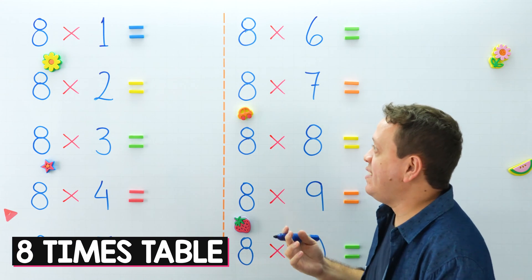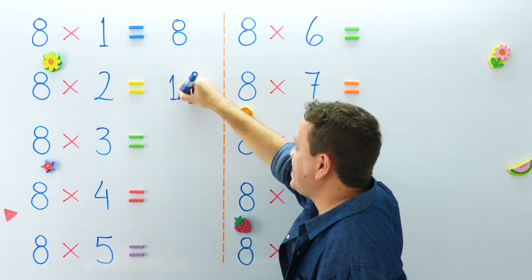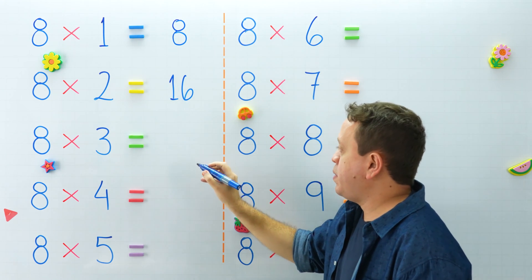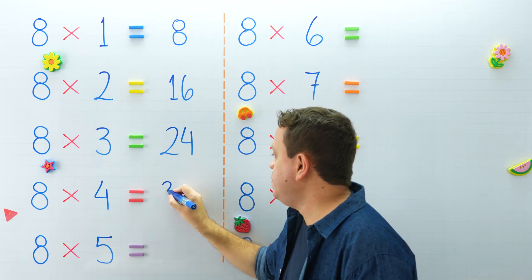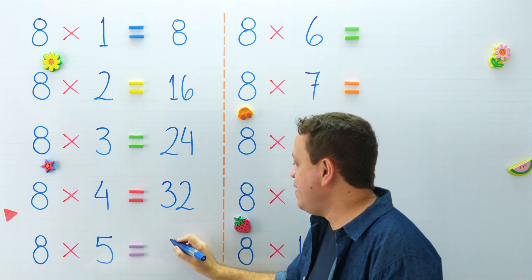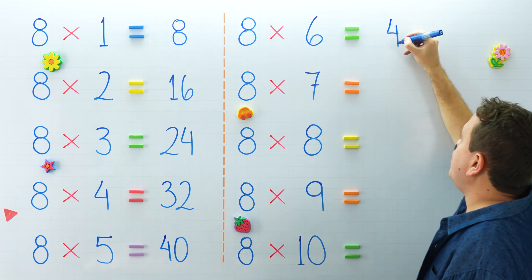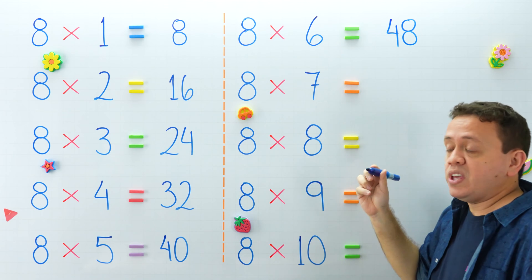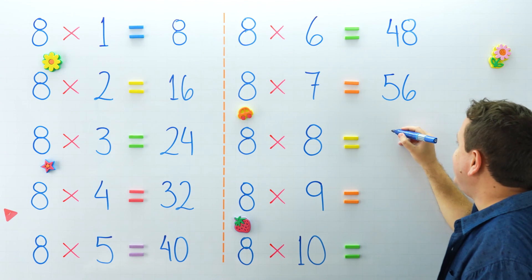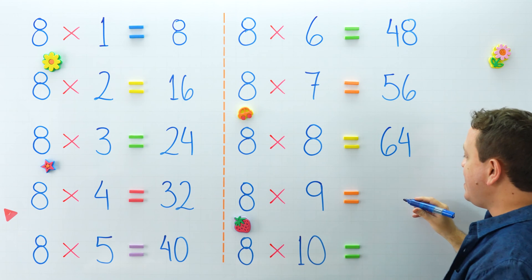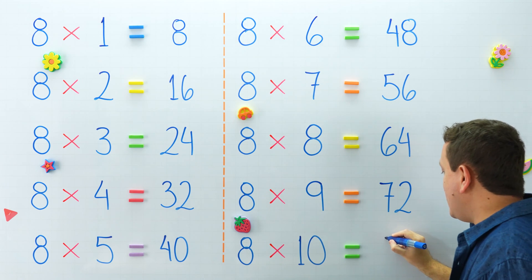It's time to study the 8 times table. 8 times 1 equals 8, and 8 times 2 equals 16. 8 times 3 equals 24, and 8 times 4 equals 32. 8 times 5 equals 40. Let's jump to the next column. 8 times 6 equals 48. 8 times 7 equals 56 — don't forget that. 8 times 8 equals 64 — I love this multiplication. 8 times 9 equals 72. And last but not least, 8 times 10 equals 80.